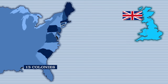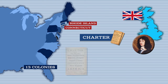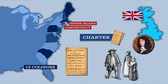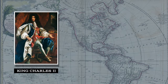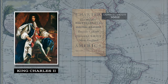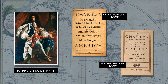Two of the 13 colonies, Connecticut and Rhode Island, were charter colonies. The king of England granted the charter, which gave permission to settlers to establish a colonial government. The charter established the rules under which the colony was to be governed. King Charles II granted Connecticut a royal charter in 1662 and Rhode Island in 1663.